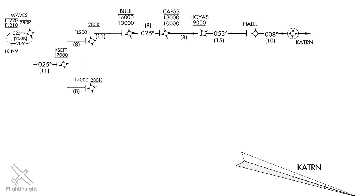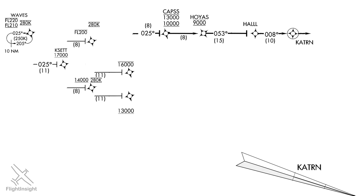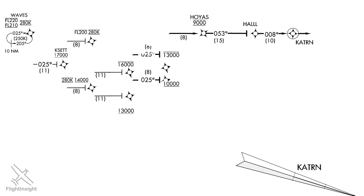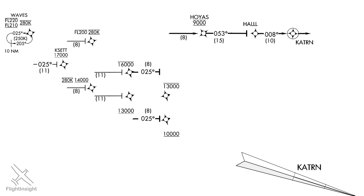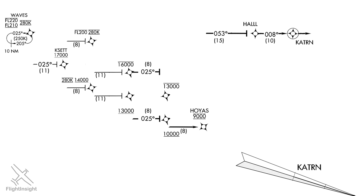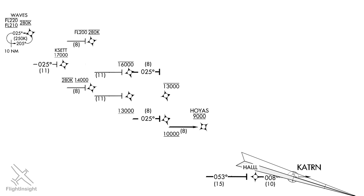Next is Bully, which also has minimum and maximum altitudes — we should cross between 13,000 and 16,000 feet. There are no speed restrictions here; that 280-knot mandatory speed can be deviated from any time after the last fix. At the Capps intersection, we again have to be between two altitudes: 10,000 and 13,000 feet. Hoyas is next, with a bar above and below indicating a mandatory altitude of 9,000 feet. Remember from FAR 91.117(a), below 10,000 feet all aircraft must be at 250 knots or slower — Hoyas is the first fix below 10,000 feet.